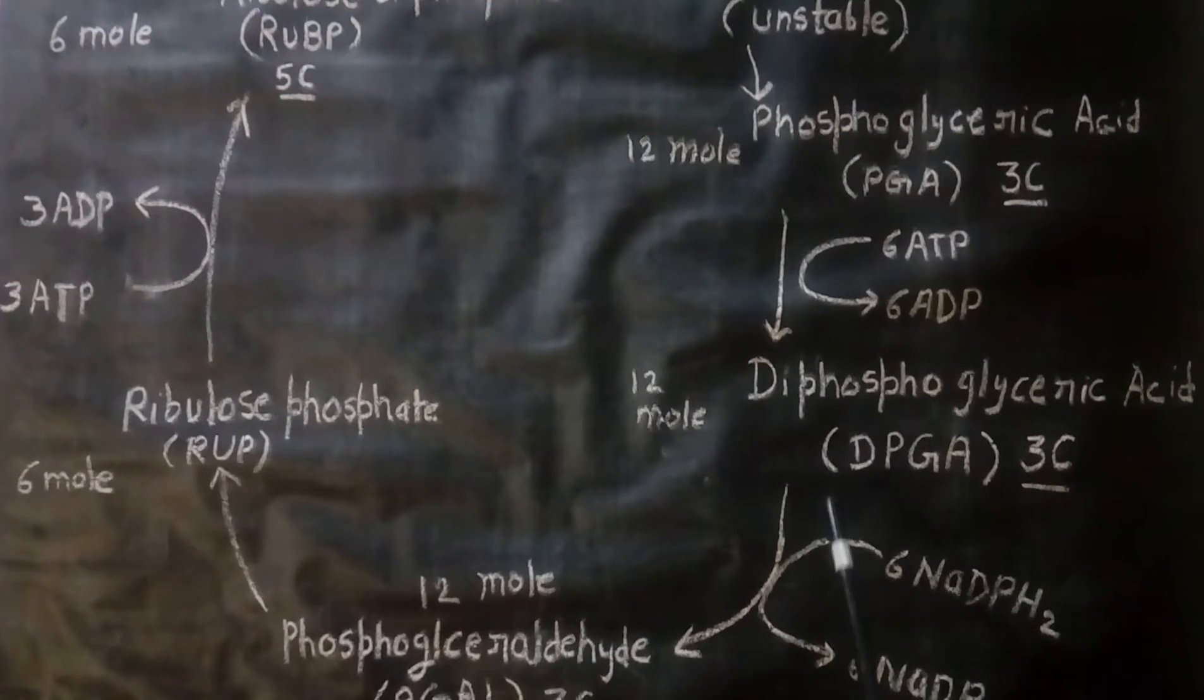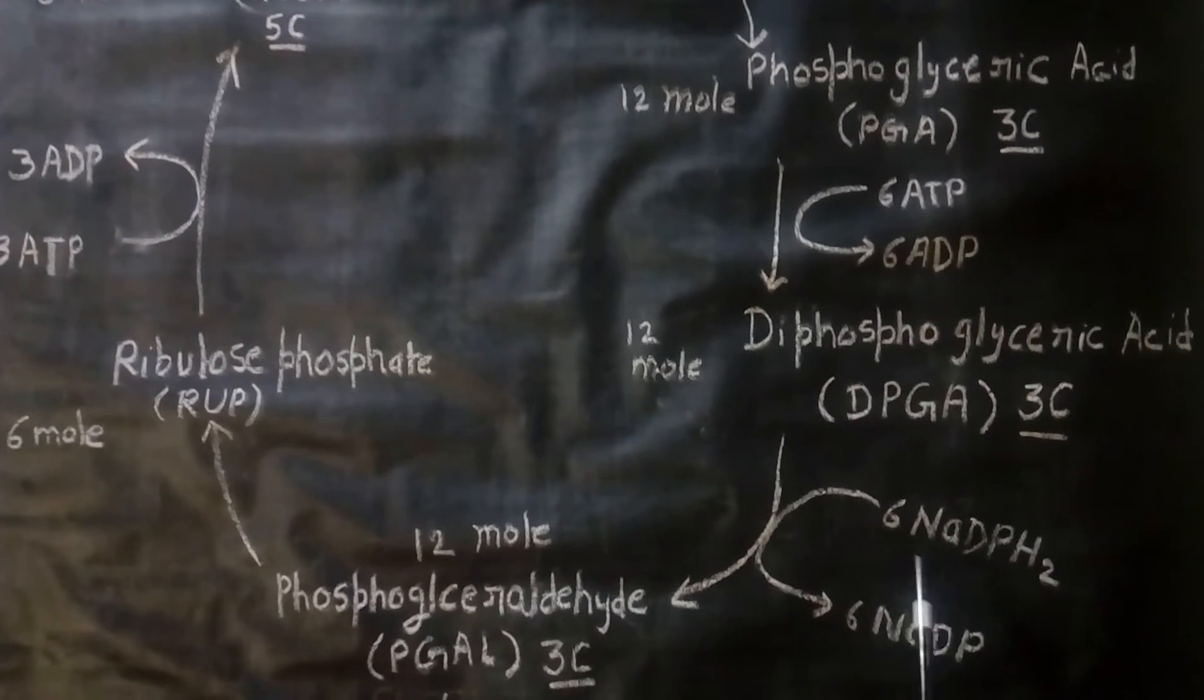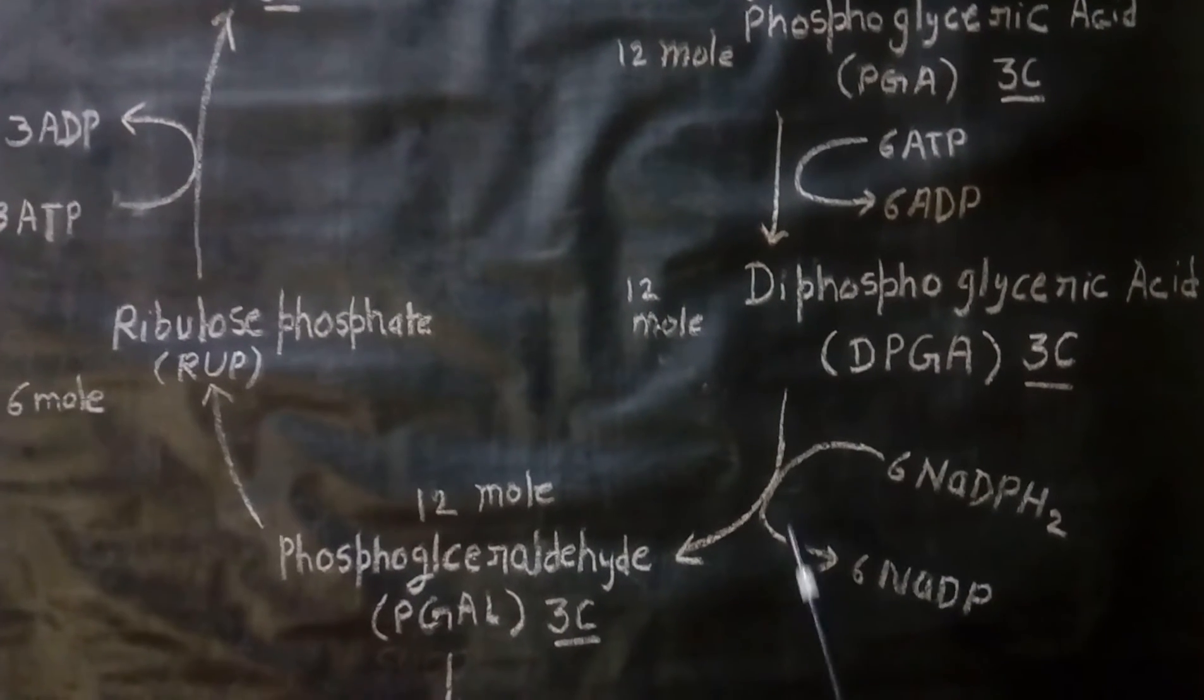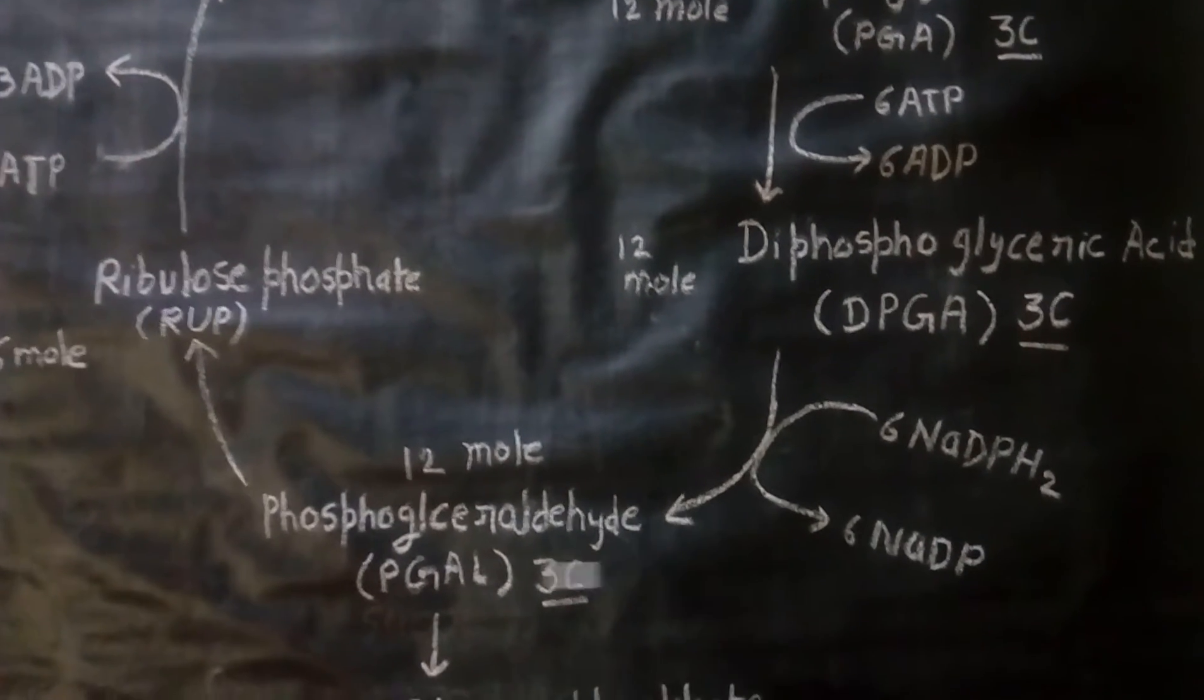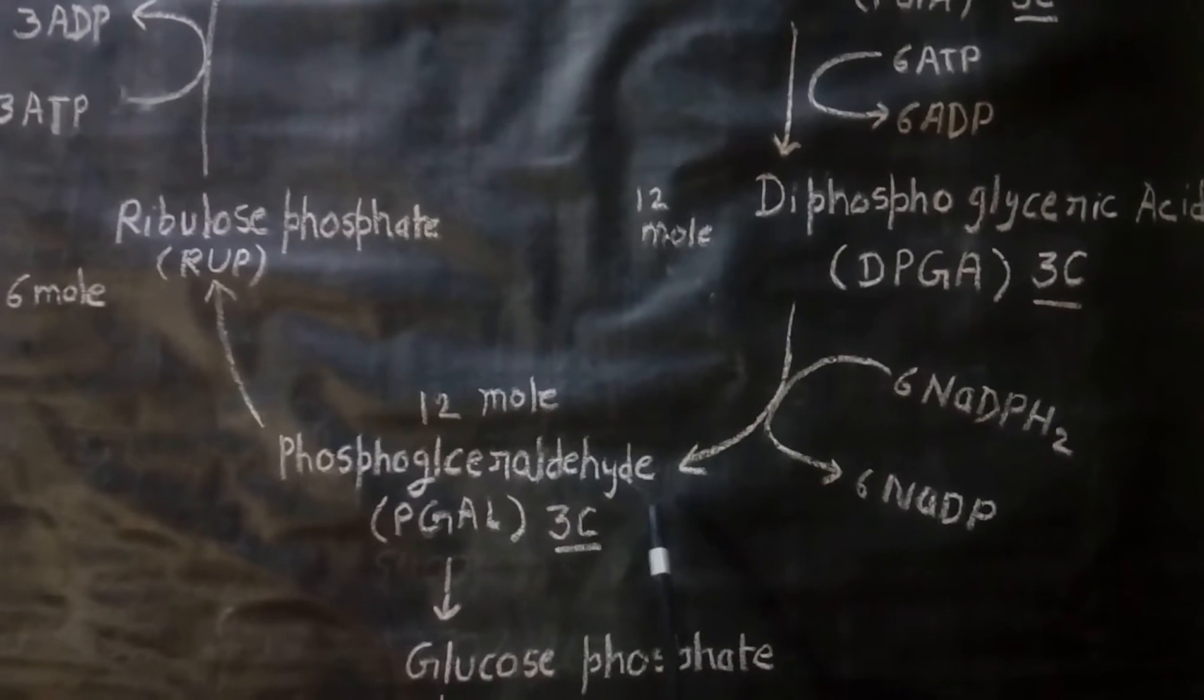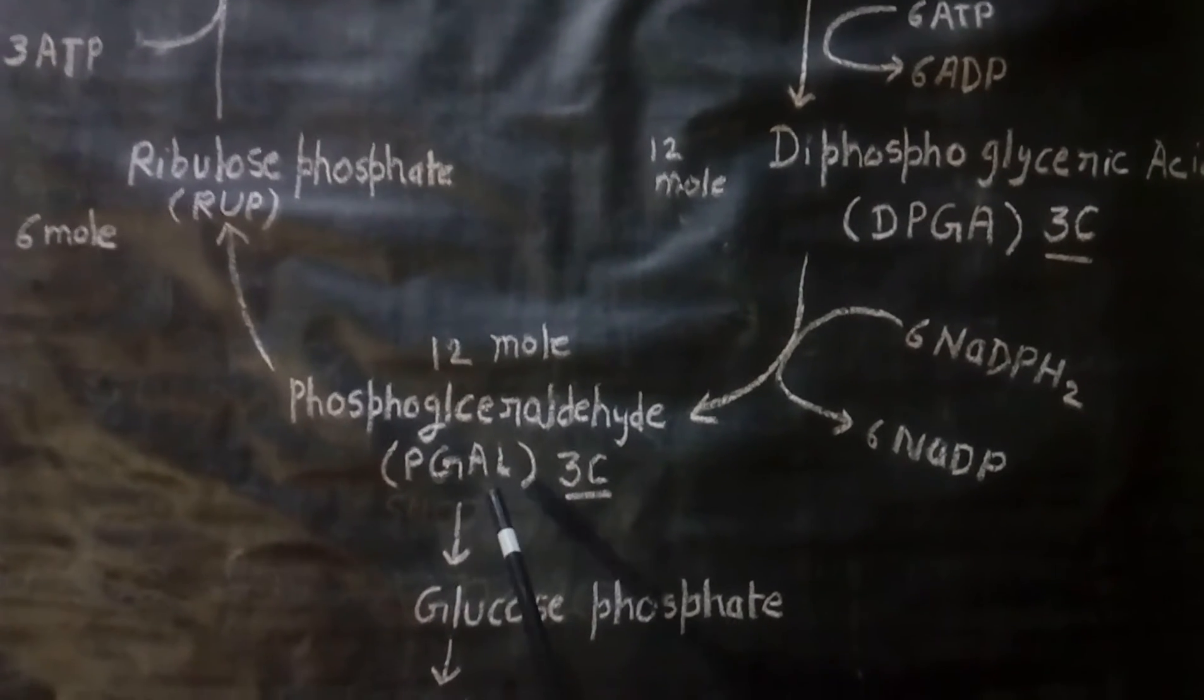Now a reduction reaction takes place. NADPH2 is converted to NADP and phosphoglyceraldehyde is formed. It is denoted by PGAL.